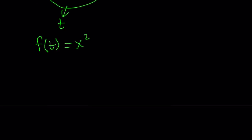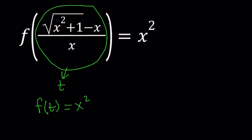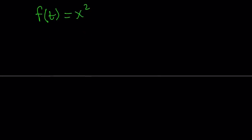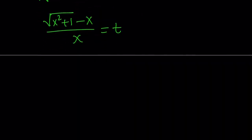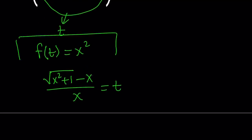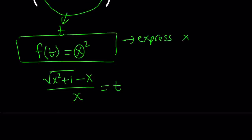So let's go ahead and see what this means. What did I call t? That radical thing: square root of x squared plus 1, minus x, over x. Let's write it down and see if we can manipulate that — it's all about manipulations. We set this equal to t. Our goal is to express x in terms of t, and this is the equation we're going to use for that.